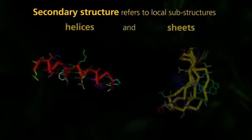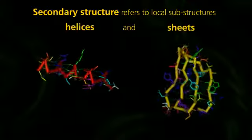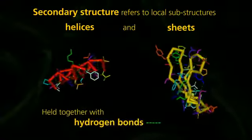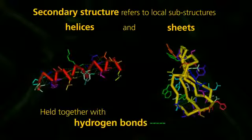Secondary structure refers to local substructures, such as helices and sheets, held together with hydrogen bonds.